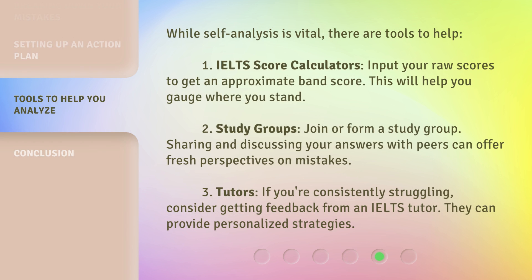While self-analysis is vital, there are tools to help. 1. IELTS score calculators: Input your raw scores to get an approximate band score. This will help you gauge where you stand. 2. Study Groups: Join or form a study group. Sharing and discussing your answers with peers can offer fresh perspectives on mistakes. 3. Tutors: If you're consistently struggling, consider getting feedback from an IELTS tutor. They can provide personalized strategies.